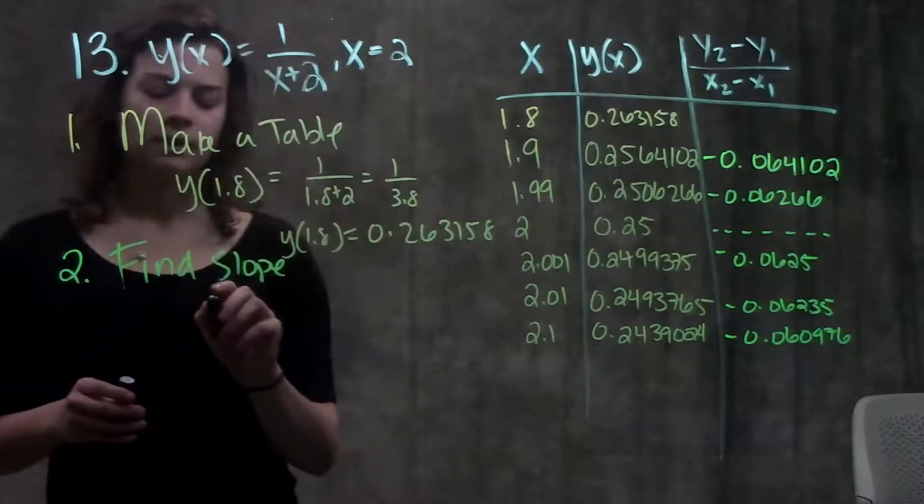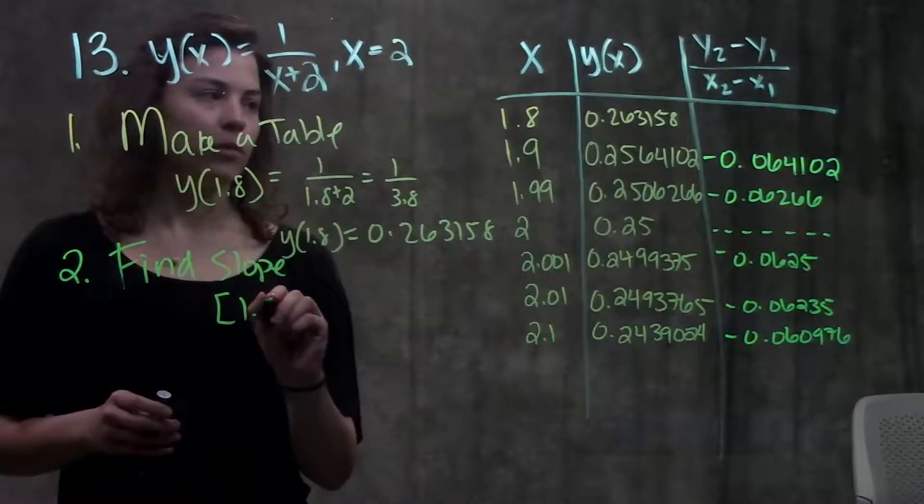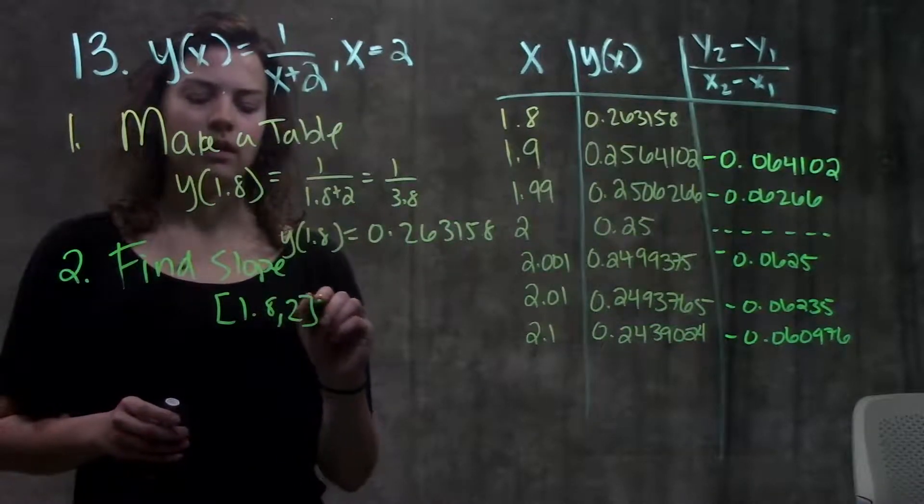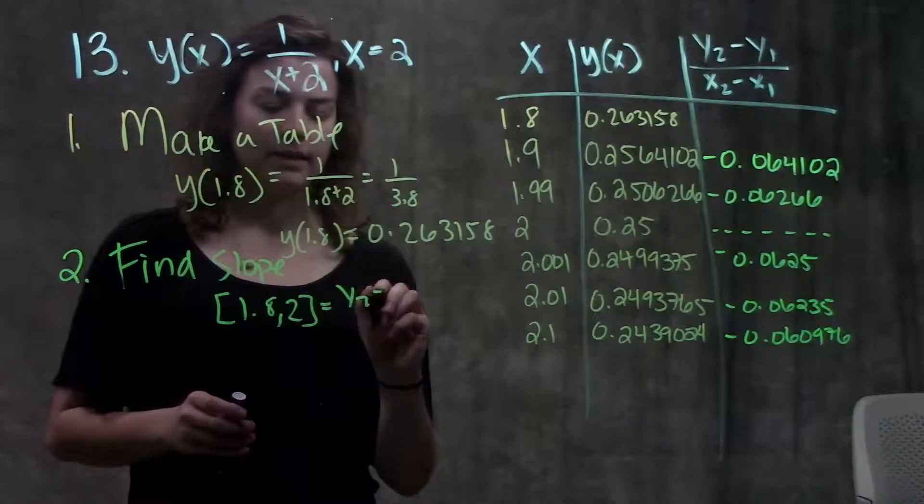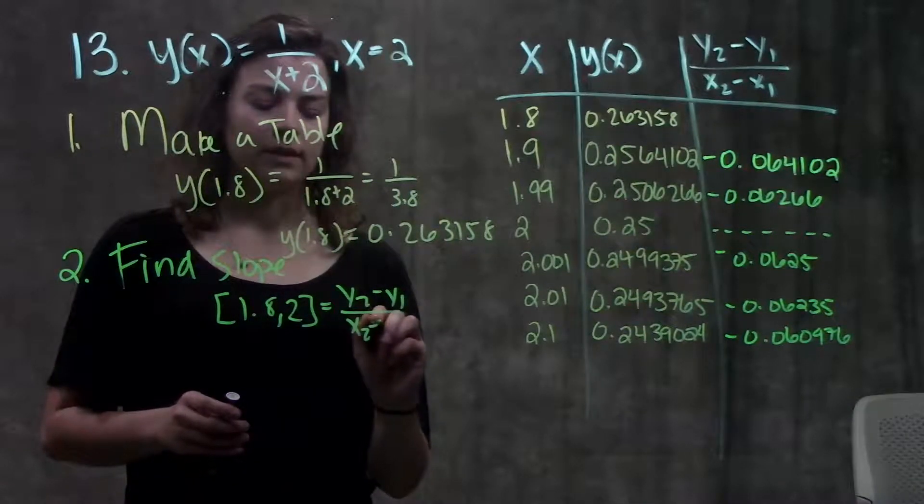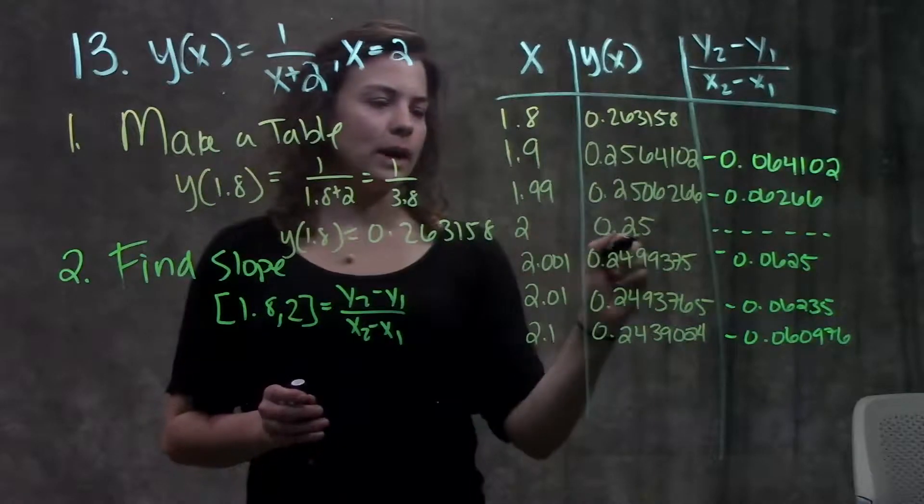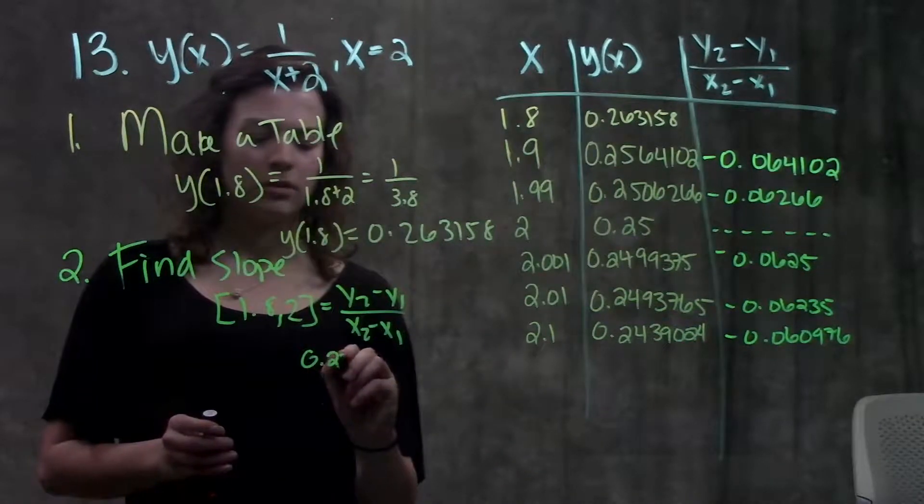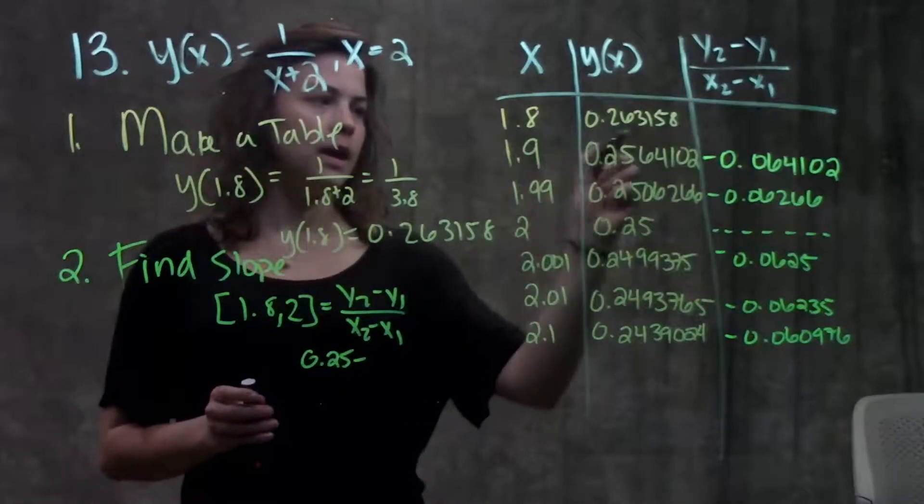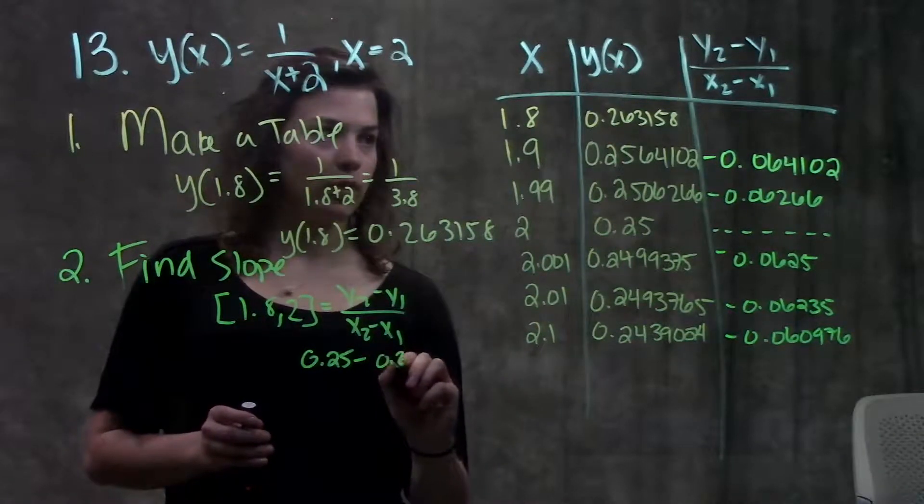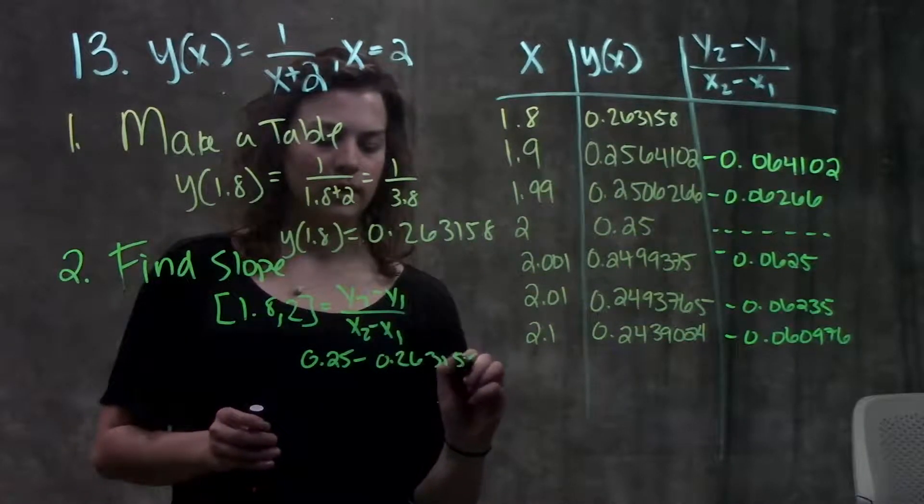So again, let's go through an example, one of these. Let's say I'm calculating the slope from 1.8 to 2. Remember your slope formula, it's the difference in the y's over difference in the x's. So I go to my table. I say, well, my y2 when I plugged in 2 into my function was 0.25, and my y1 when I plugged in 1.8 is this whole long decimal here.